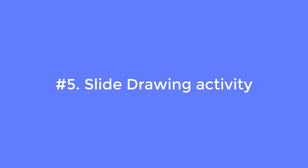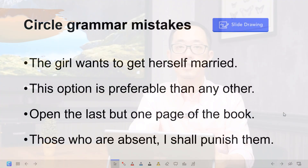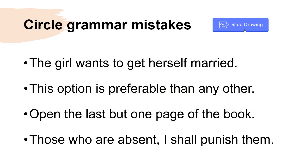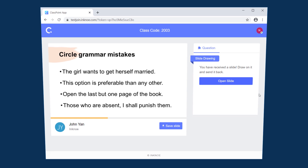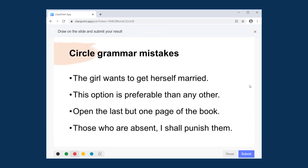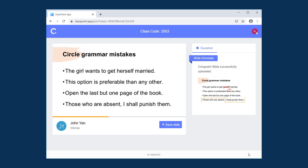Number five: the slide drawing activity. This new question type allows you to send the current slide to students, let them draw on it, and then send it back. There are tons of ways to use slide drawing — for example, you can ask students to circle out grammar mistakes, annotate on images, draw graphs, or even send them a blank slide so they can write their answers and submit back.